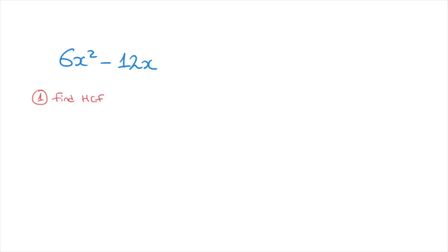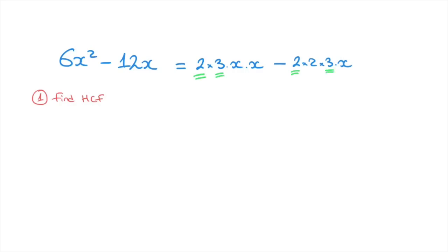One way of doing that is to write each term as a product of its factors. So 6x squared as a product of its factors would be 2 times 3 times x times x, minus 12x which as a product of its factors would be 2 times 2 times 3 times x. The highest common factor is the product of all common factors: both terms share a 2, a 3, and an x. So the highest common factor equals 2 times 3 times x, which is 6x.